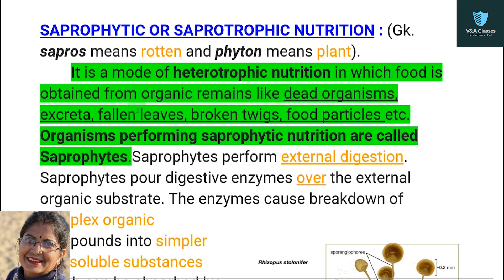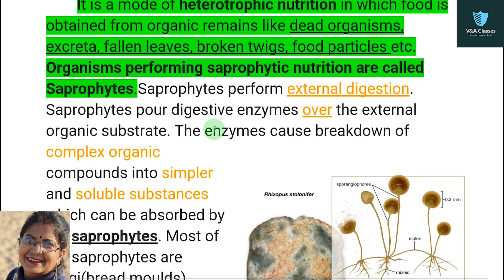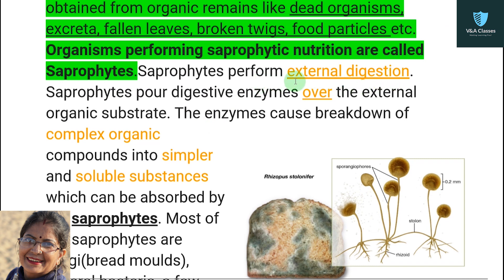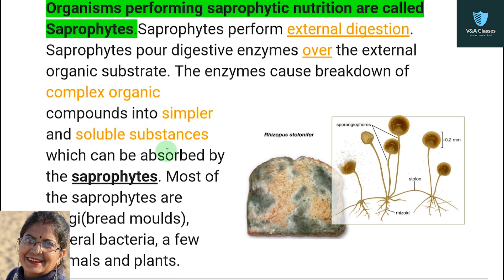In this mode of heterotrophic nutrition, food is taken from organic remains — for example, dead organisms, excreta, fallen leaves, broken twigs, and food particles. Organisms performing saprotrophic nutrition are called saprophytes. Saprophytes perform external digestion. They secrete digestive enzymes over the external organic substance, causing breakdown of complex organic compounds into simpler and soluble substances, which are then absorbed by the saprophytes.